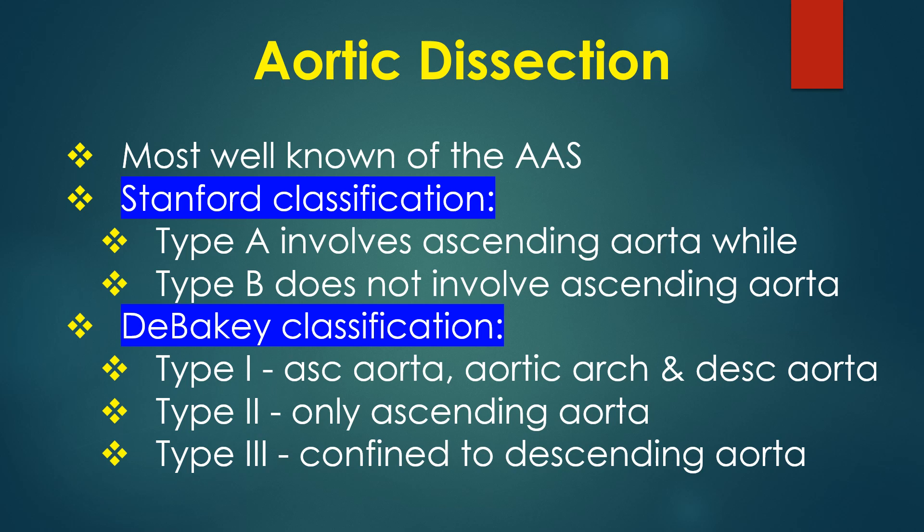Aortic dissection is by far the most well known of the acute aortic syndromes. In the Stanford classification, type A involves the ascending aorta while type B does not. In the DeBakey classification, type I involves the ascending aorta, arch and descending aorta; DeBakey type II involves only the ascending aorta; and DeBakey type III is confined to the descending aorta.